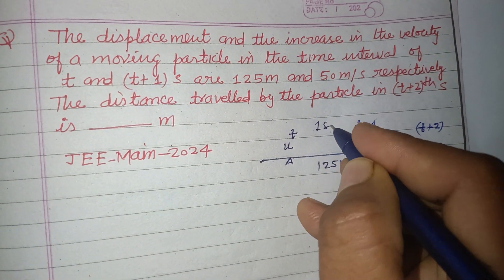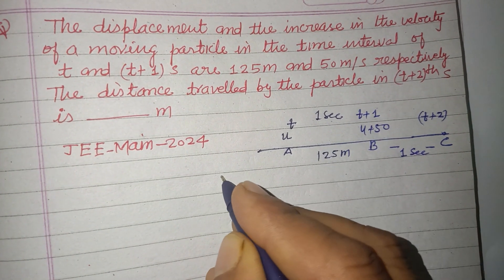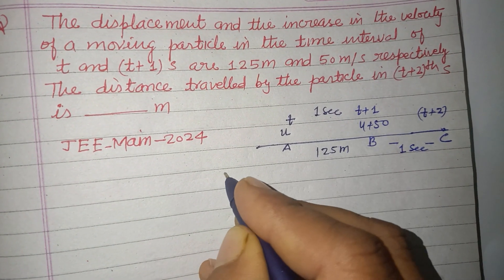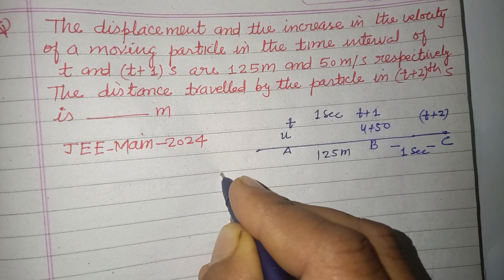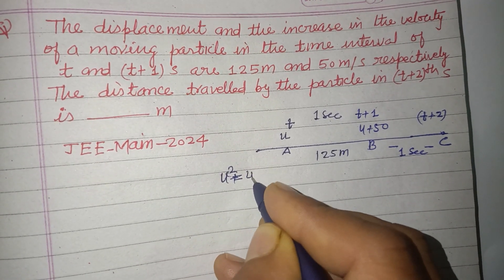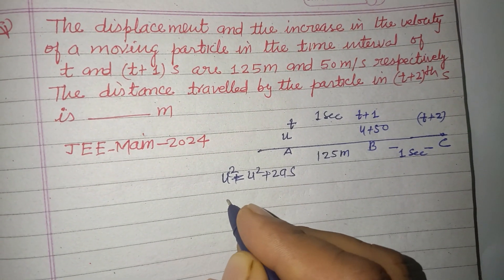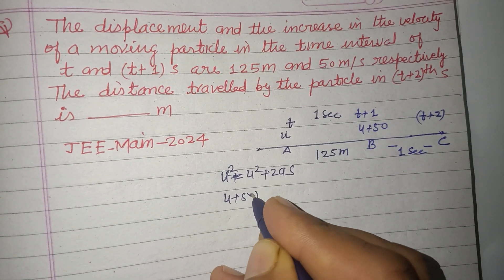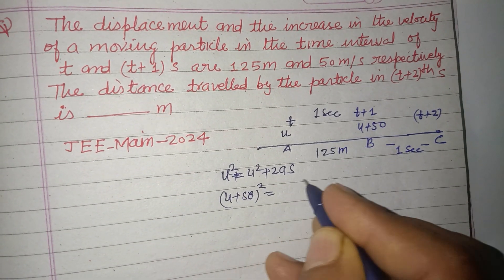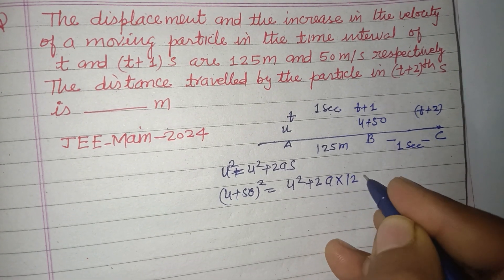Using v² = u² + 2as, so v is u plus 50 whole square, u is u square, and 2a is required here, s is 125.